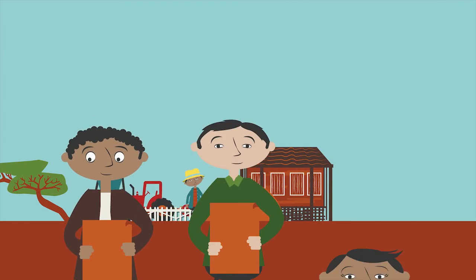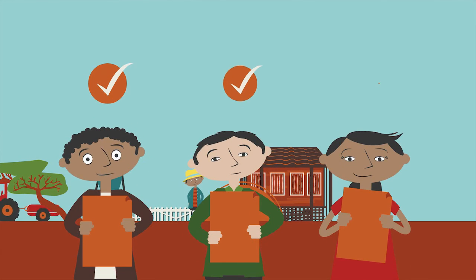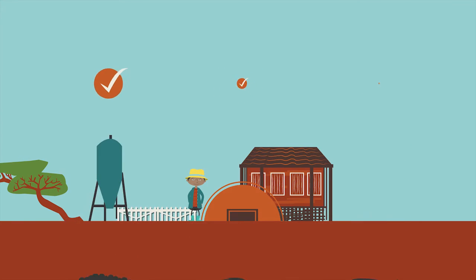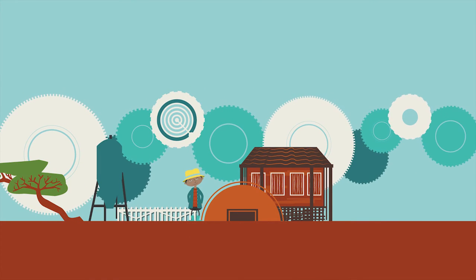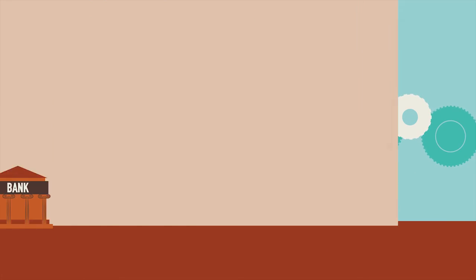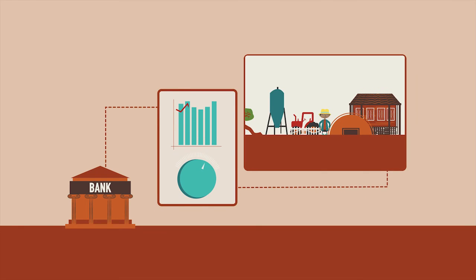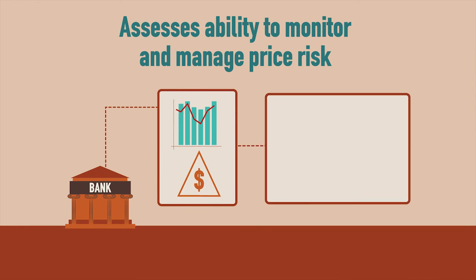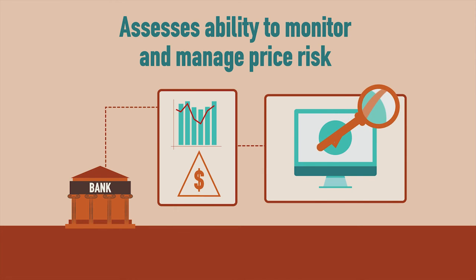The agribusiness must show that they have staff able to effectively utilize such contracts. Whatever the strategy of the agribusiness, it is vital that a bank considers their exposure to price risk, and assesses the firm's ability and capacity to monitor and manage price risk.